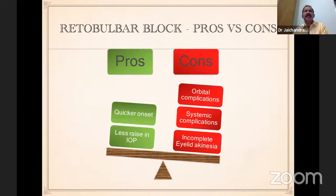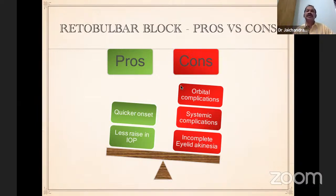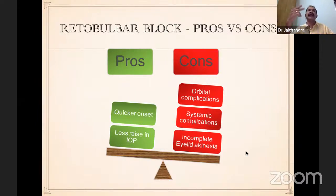Advantages of retrobulbar block: since it is deposited near the target area, the action is quicker and lesser volume is required, with less rise in intraocular pressure. However, since the needle is angulated more medially upwards and inwards, more orbital and systemic complications can occur. Also, local anesthetics may not traverse to the upper eyelid area, leading to incomplete eyelid akinesia — the globe may be tense but the eyelid still moves. Due to these complications, retrobulbar block is now not practiced much.